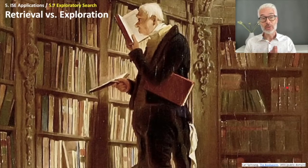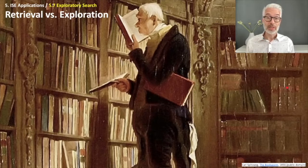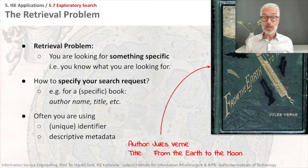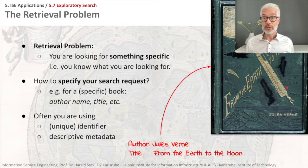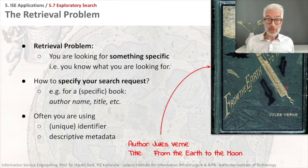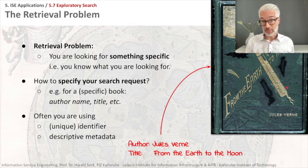Before we dive deeper into exploratory search, we have to make clear first what's the difference between retrieval and exploration. In retrieval, you look for something rather specific that you already know — like in a library when you go looking for a specific book, probably also a specific edition. For example, you look for 'From the Earth to the Moon' by Jules Verne. You specify your search using the author name and title, and often unique identifiers and descriptive metadata.